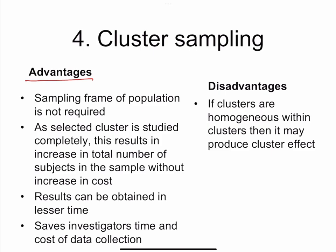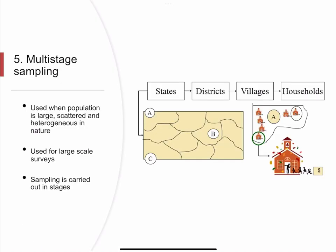Advantages of cluster sampling: a sampling frame of the entire population is not required since each selected cluster is studied completely; this results in increased number of subjects without increased cost; results can be obtained in lesser time, saving time and cost of data collection. Disadvantage: if clusters are homogeneous within themselves, it may produce a cluster effect — that is the disadvantage with cluster sampling.